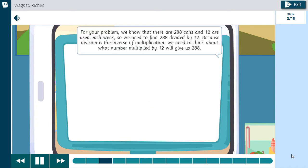For your problem, we know that there are 288 cans, and 12 are used each week, so we need to find 288 divided by 12. Because division is the inverse of multiplication, we need to think about what number multiplied by 12 will give us 288.